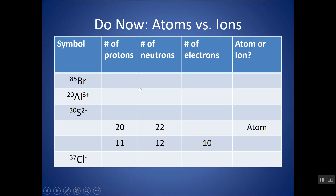Let's try another practice — each atom or ion represents a row. Tell me the number of protons, neutrons, and electrons, and whether this is an atom or an ion. For Br-85: 85 is the mass number. Looking up Br, it has 35 protons. Neutrons are found via subtraction: 85 minus 35 gives 50. Since this is an atom — notice there's no charge in the top right-hand corner — the number of electrons is the same as the protons: 35. This is an atom; no charge.